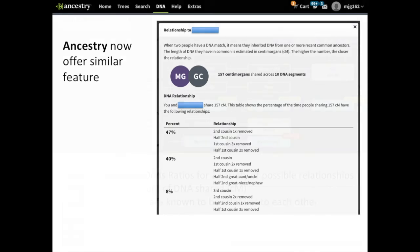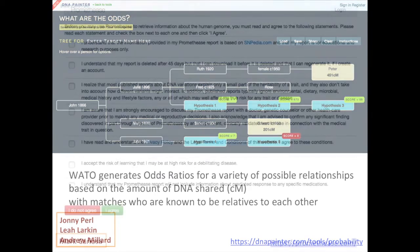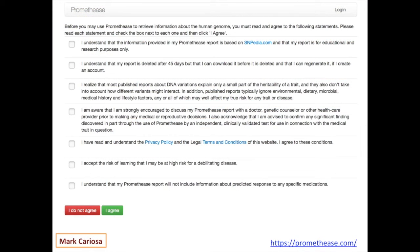Johnny Pearl, Leah Larkin, and Andrew Millard developed the What Are The Odds tool, which generates odds ratios for a variety of possible relationships based on the amount of DNA shared with matches who are known relatives to each other. This is very useful for working with adoptees and helping to place the adoptee in the family tree of the known matches. Promethease is another tool — you can upload your data from any of the major direct-to-consumer companies and it will produce a medical report based on information from SNPedia.